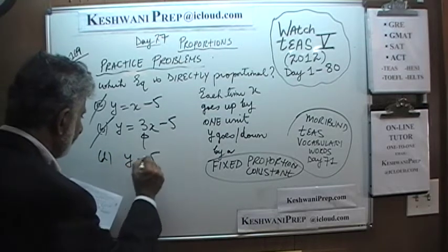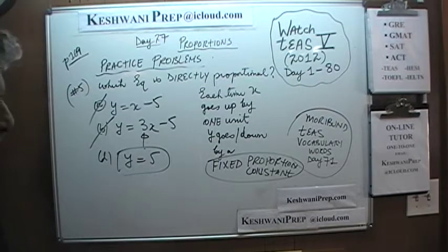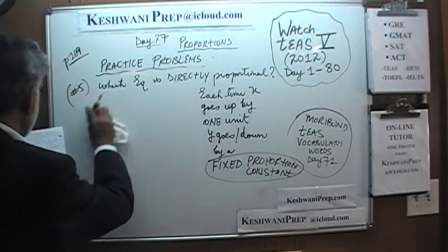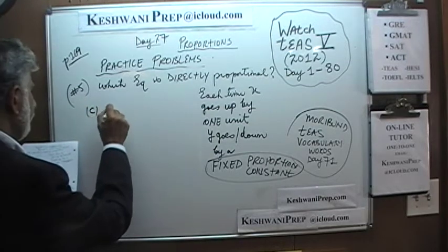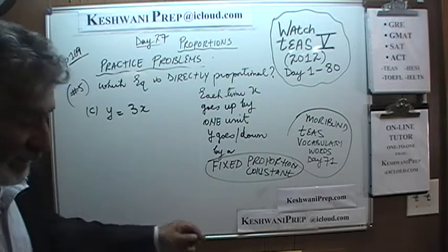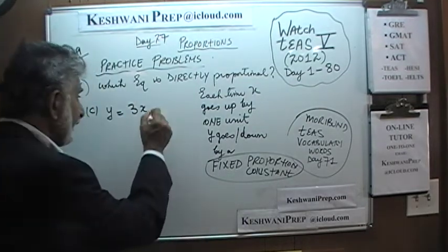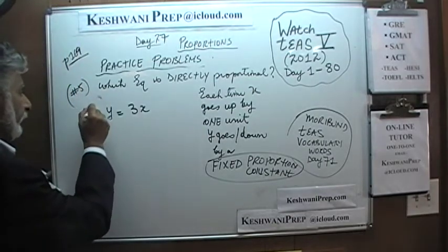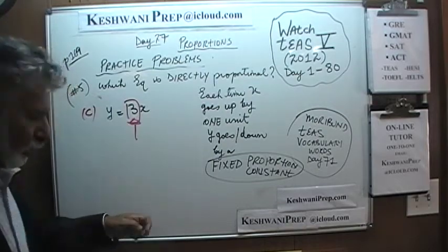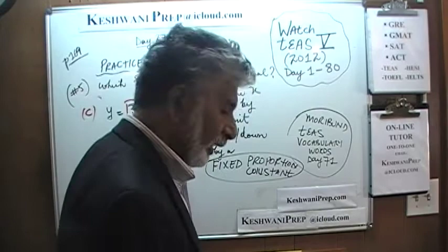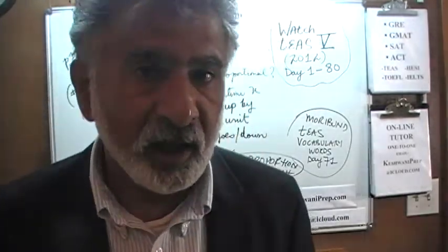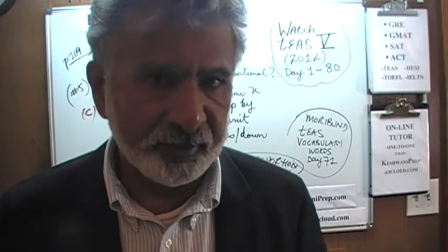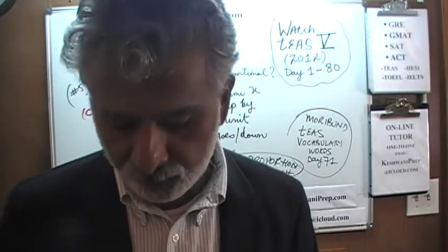Answer choice D says y is equal to five — that doesn't even have x in it, so that's not good. The correct answer is C: y is equal to three x. If you were to add something like three x minus seven, that would be wrong. But it's just three x, and that will do just fine. The proportionality constant here is three, which means y always goes up by three times the amount of x. Whatever x is, just multiply by three and you have y — always. That's called proportionality.